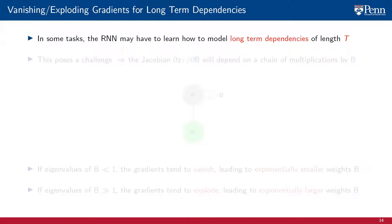In some learning tasks, the recurrent neural network may have to learn how to model long-term dependencies of length T in the data sequence. That poses a challenge, however. Recurrent neural networks are trained via backpropagation through time, which relies on computing gradients with respect to the weights of the neural network and propagating them back in time. But the Jacobian of the hidden state c_t with respect to the corresponding weight matrix B will then depend on a chain of multiplications by that weight matrix.